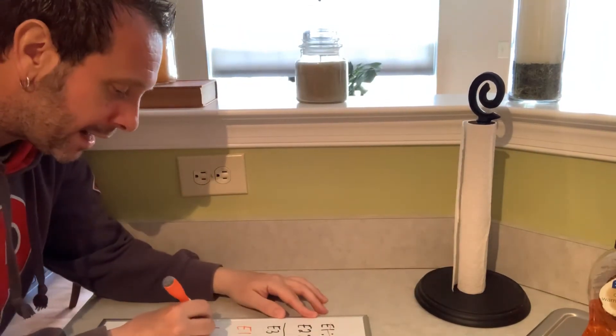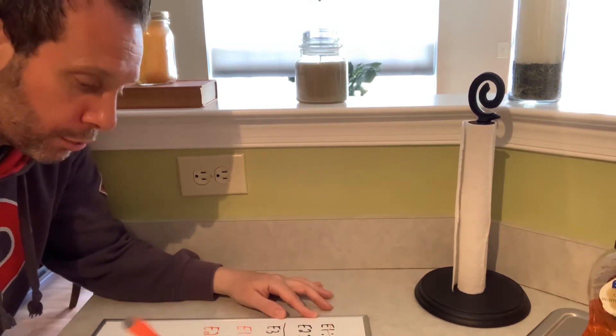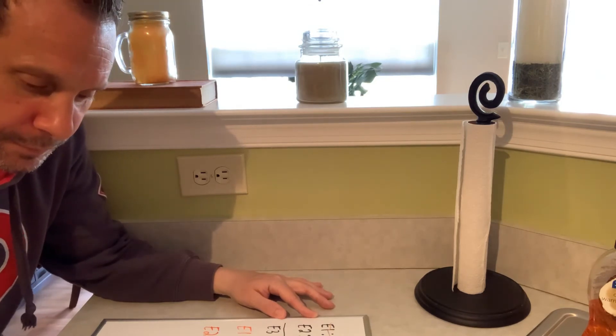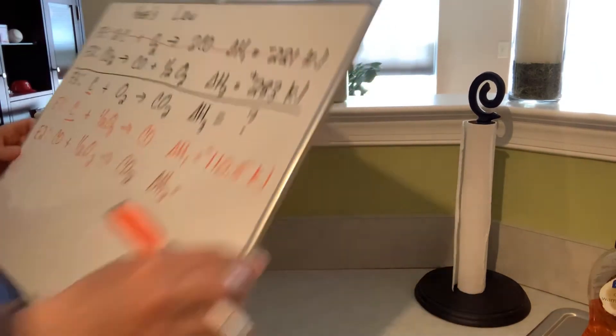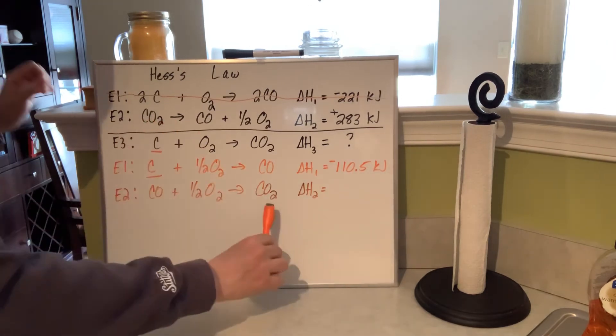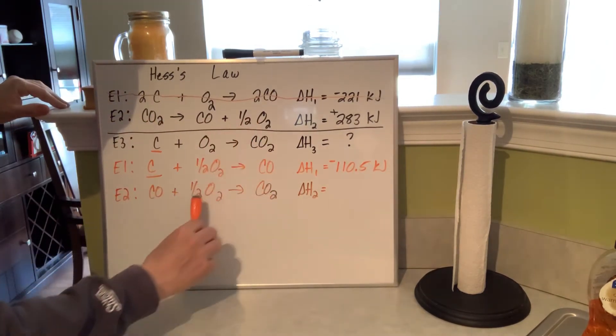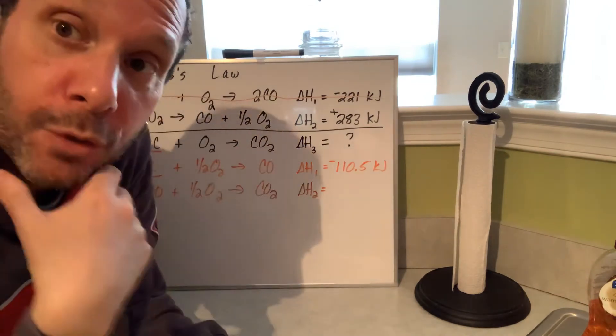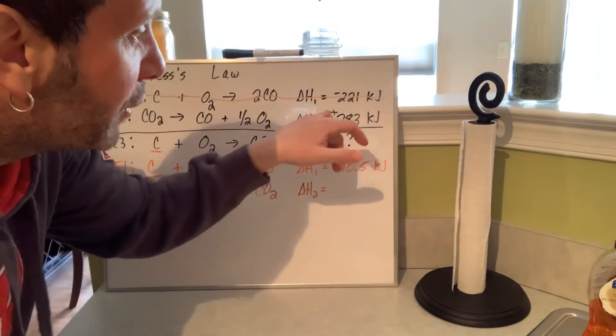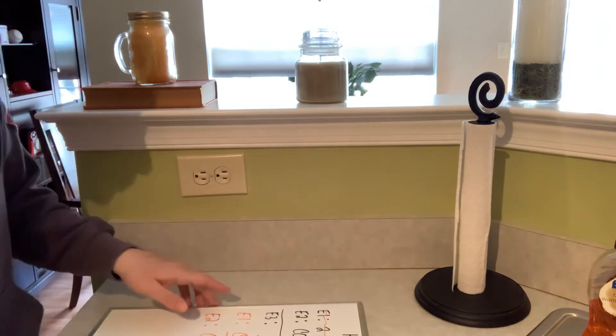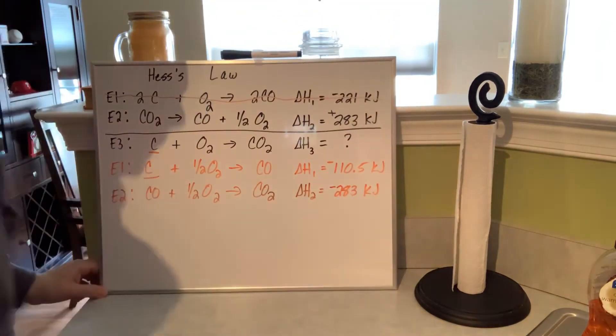And when I flip it around, this is what happens. What I'm going to do is I'm going to take the reactants or in this case, the reactant and bring it to the product side. And I'm going to take the products and bring them to the reactant side. So my equation two is going to become CO plus a half O2 will produce CO2. I took the CO2, I brought it to the product side. I took the carbon monoxide and the half mole of O2 that were on the product side and brought it to the reactant side. So what I need to do now, if I flipped the equation around, that means I need to flip the sign of the equation. Instead of it being 283 kilojoules positive, it's going to be negative 283 kilojoules.